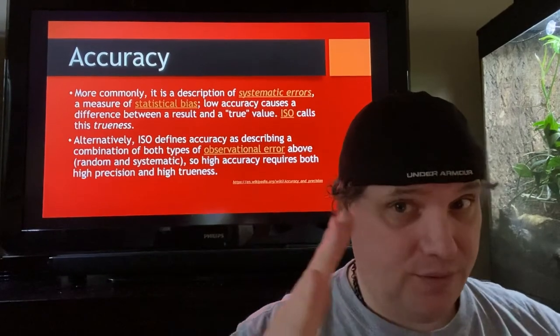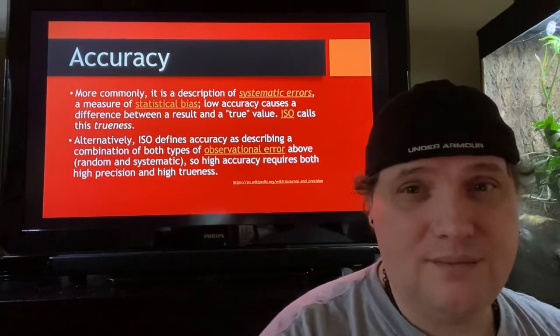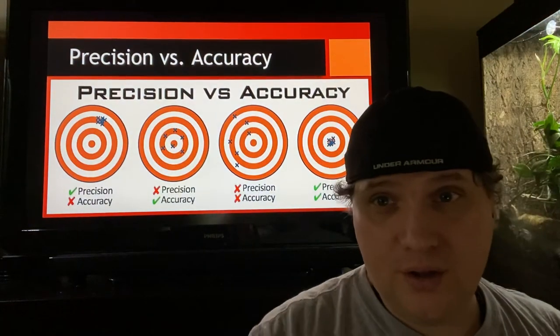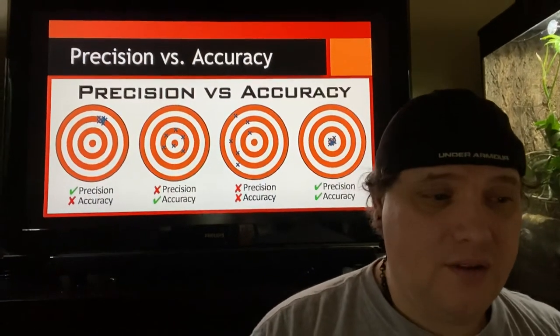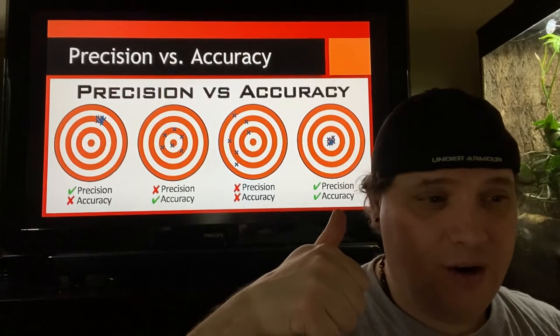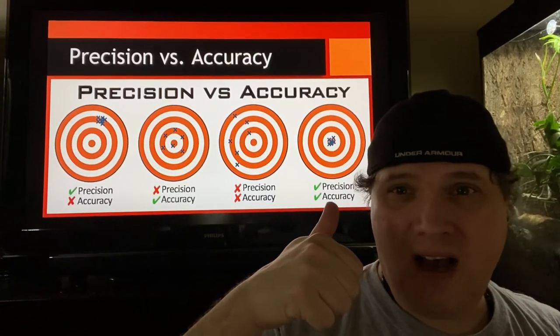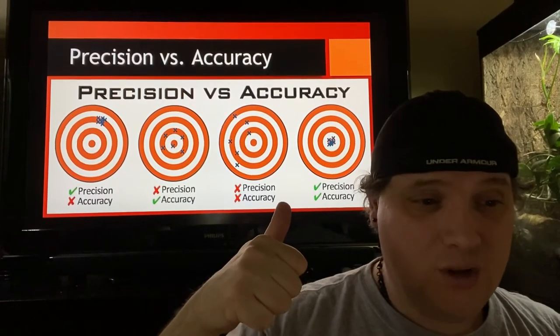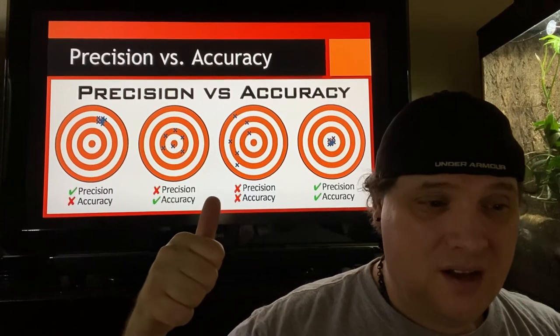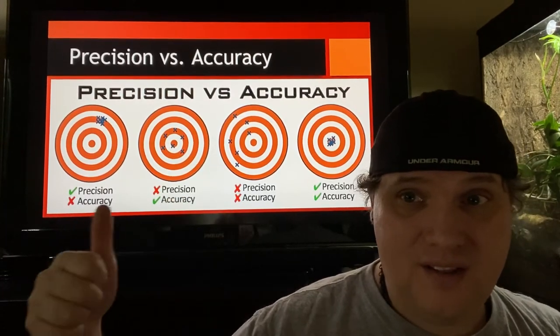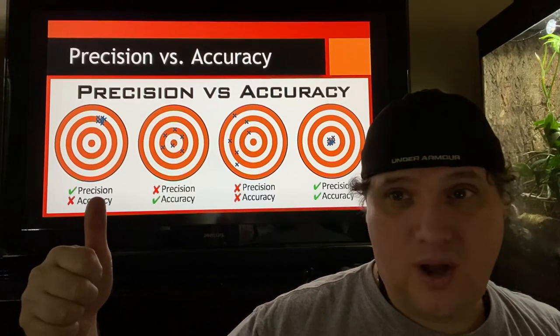So those are different things you've got to kind of learn to think of. So there's your target. There's your target boards. So here you've got this one right here where it's basically high precision, high accuracy, low precision, low accuracy, low precision, high accuracy right here, and then high precision, low accuracy. So you can see for your own reference, if you want to visualize it like hitting targets, sometimes the best way.